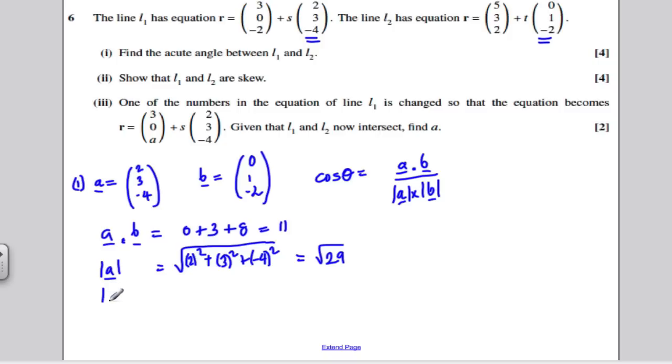And what's the size of B? Well, it's again the square root of 0 squared plus 1 squared plus minus 2 squared. 0 plus 1 plus 4 is the square root of 5.